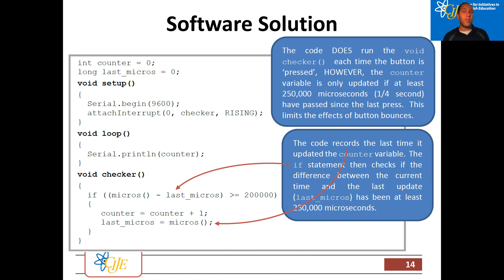So again, micros is the time of day or the time since you're Arduino is on. Last micros is the last time that I push that button. We want to make sure enough time has passed between now and the last time I pushed that button where the bouncing has finished and now we can do counter equals counter plus one.